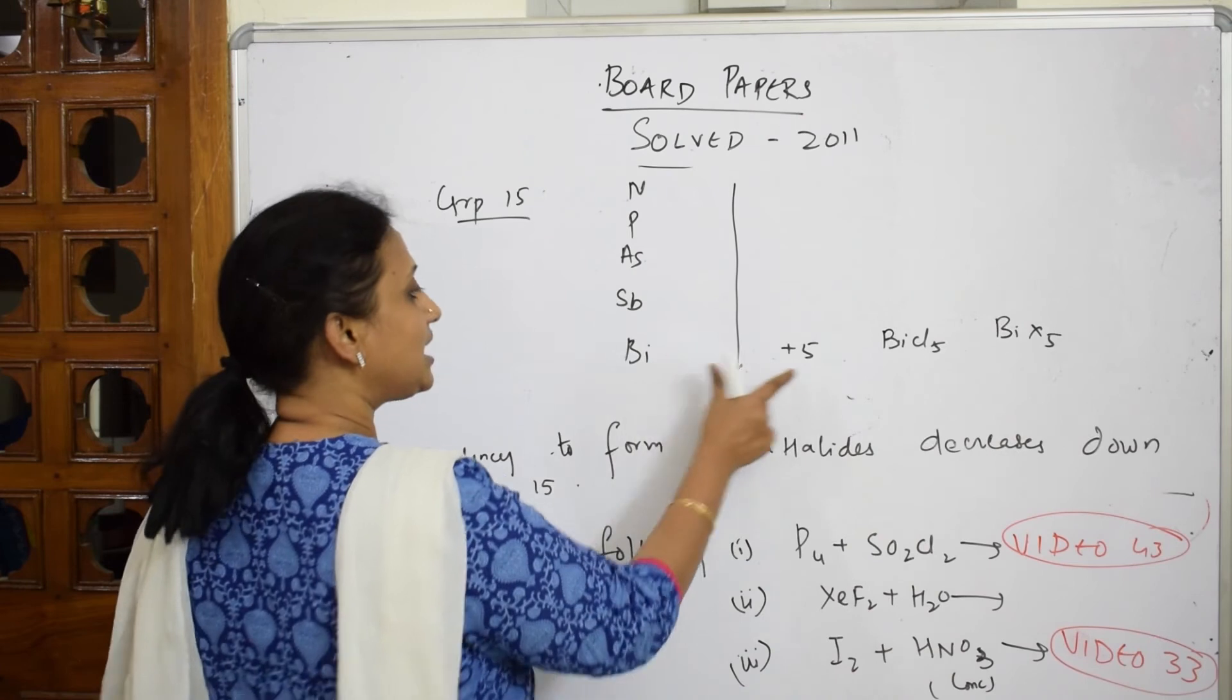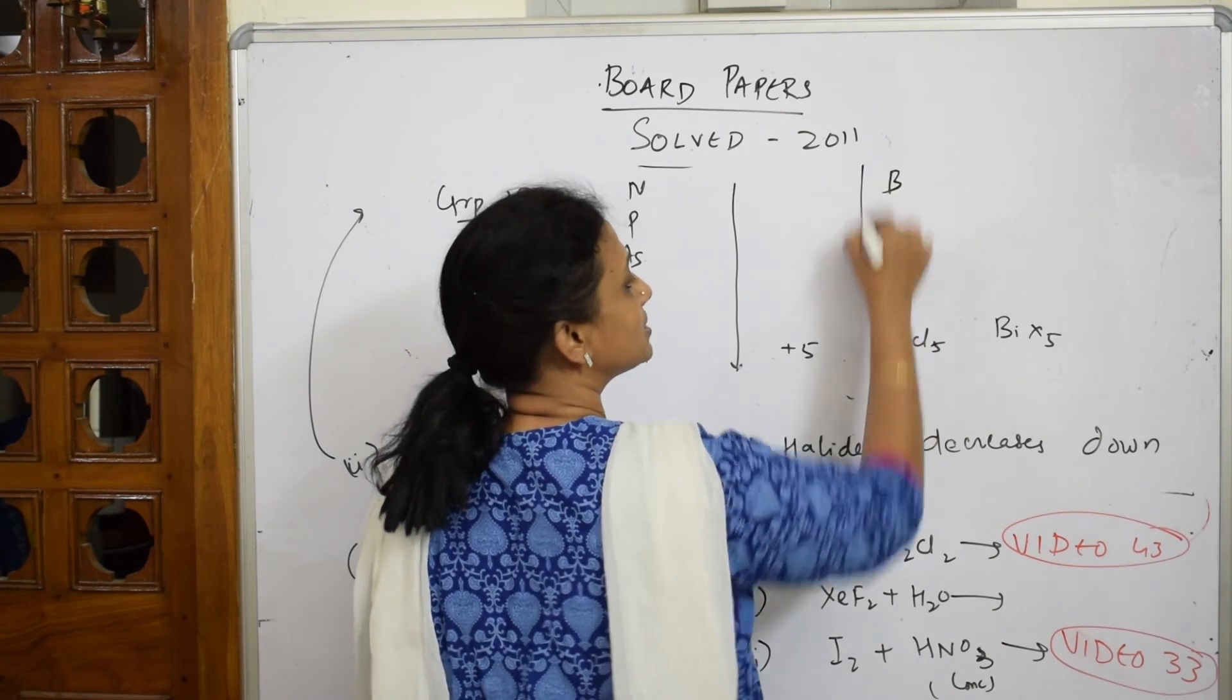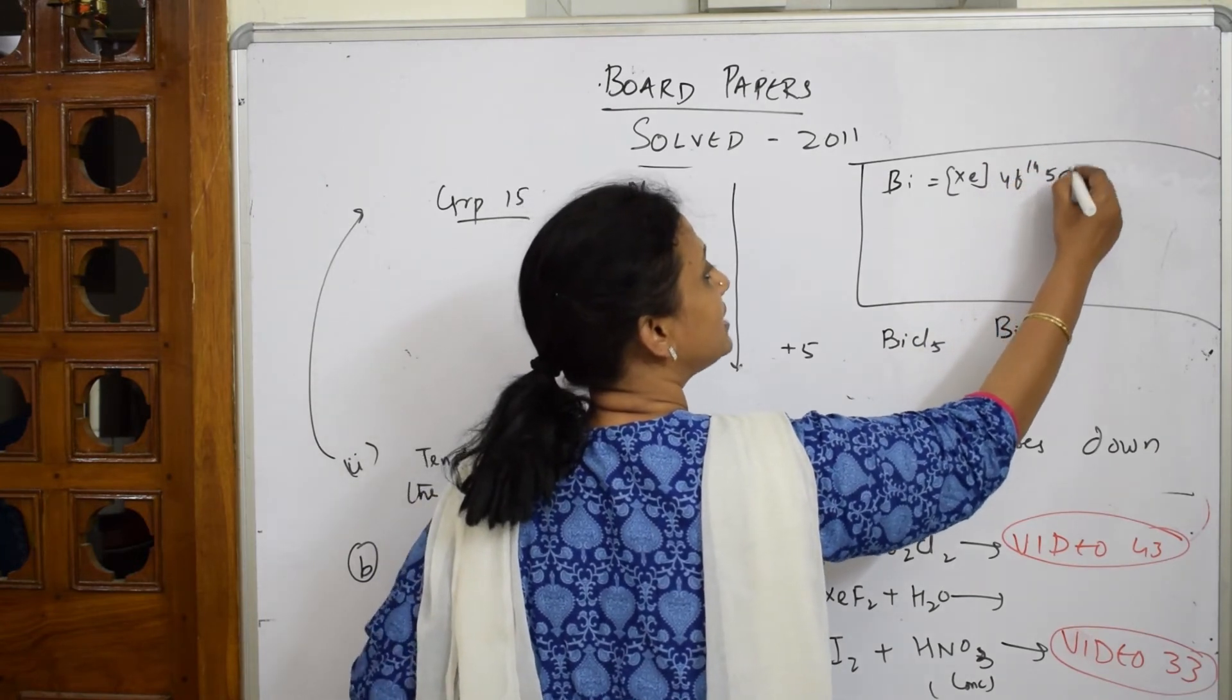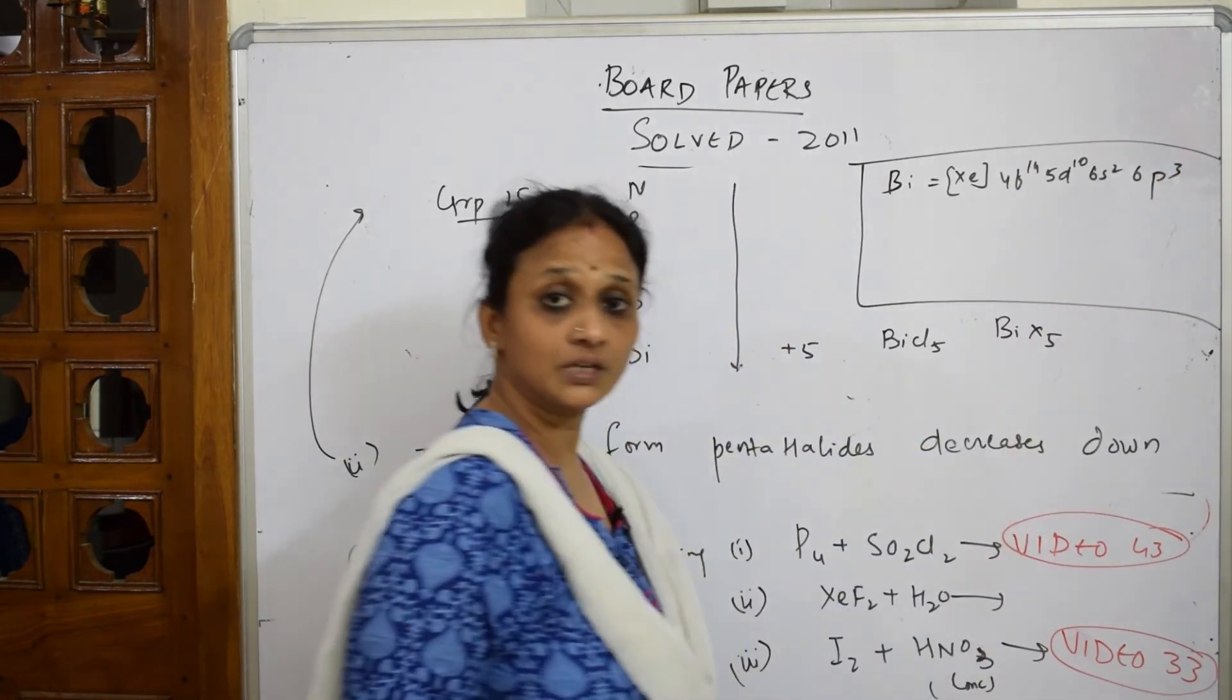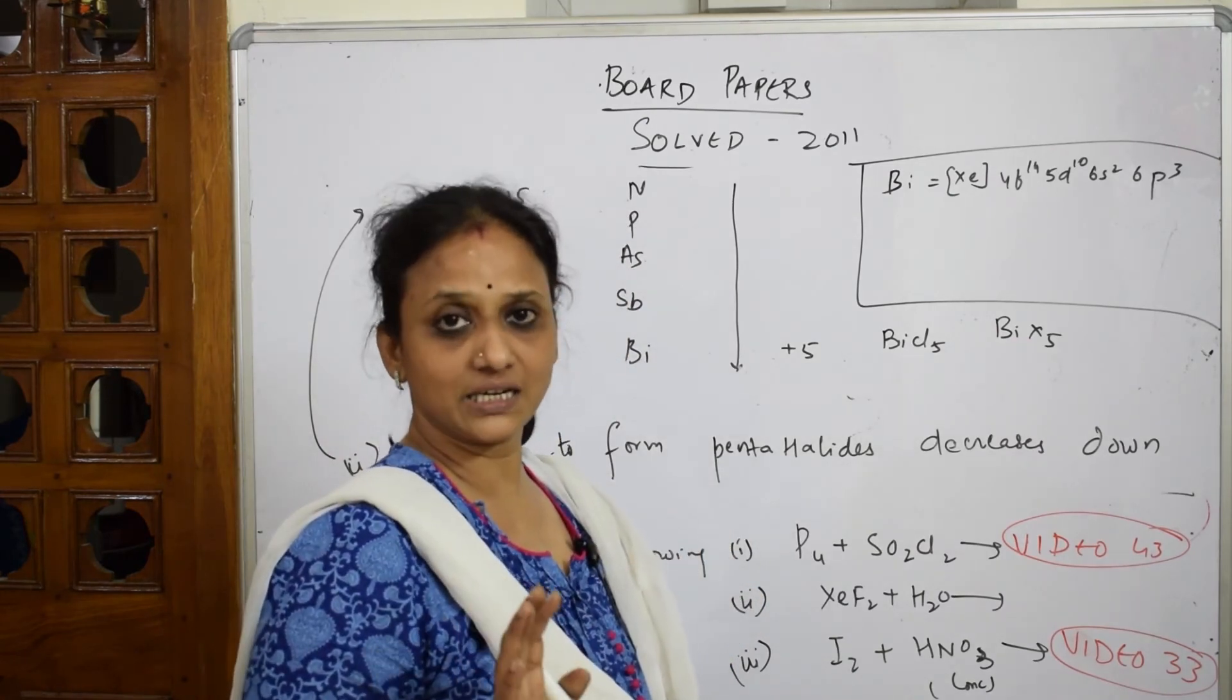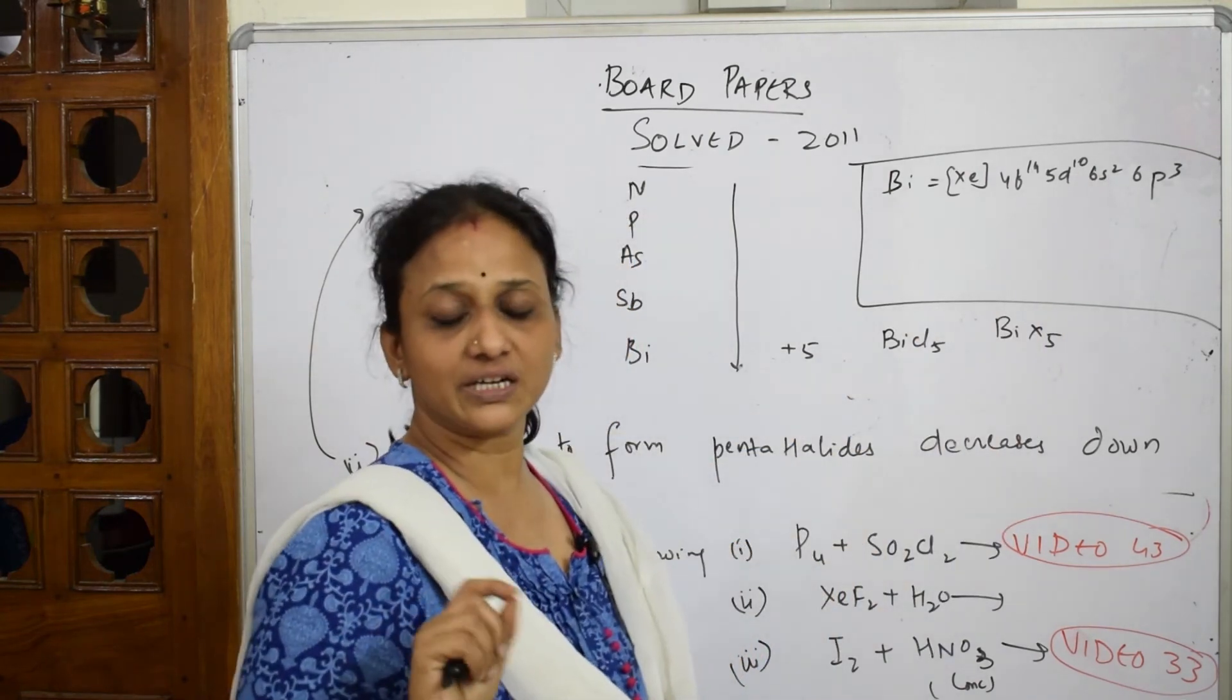Because PCl5, NCl5 all these are observed, but here when I go down it is decreasing. Why? Simple reason - you have to write the keyword. They've asked it is decreasing down the group, so pick up bismuth. What happens in bismuth? The electronic configuration is [Xe] 4f14 5d10 6s2 6p3.